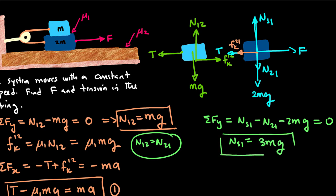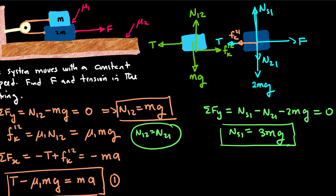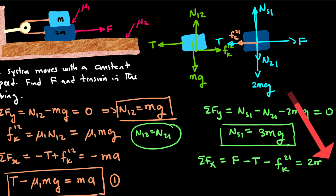Which totally makes sense. Similarly, the sum of forces along the x direction, you will have F minus T minus Fk21 equal to 2ma.